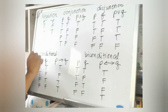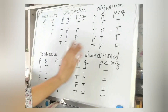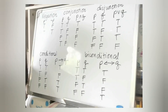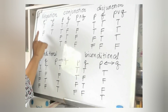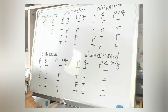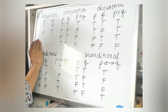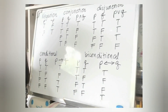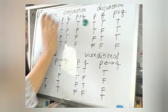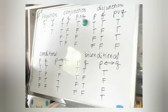But before that, let us recall the different rules in which we can determine the truth value. For the negation, it's simple: if P is true, then not P is false; if P is false, then not P is true. For the conjunction, we just have to remember that there is only one case that the conjunction is true.